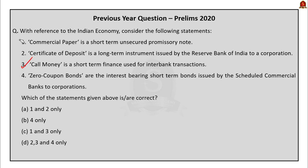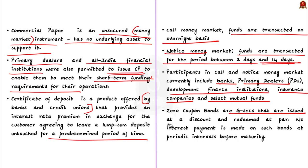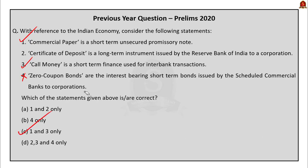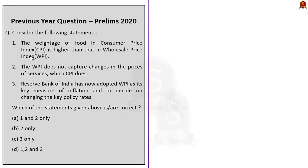Statement four is also incorrect because zero coupon bonds are government securities issued at a discount and redeemed at par, and no interest payment is made on periodic intervals before maturity. That is how we arrive at option C where statements one and three are correct.